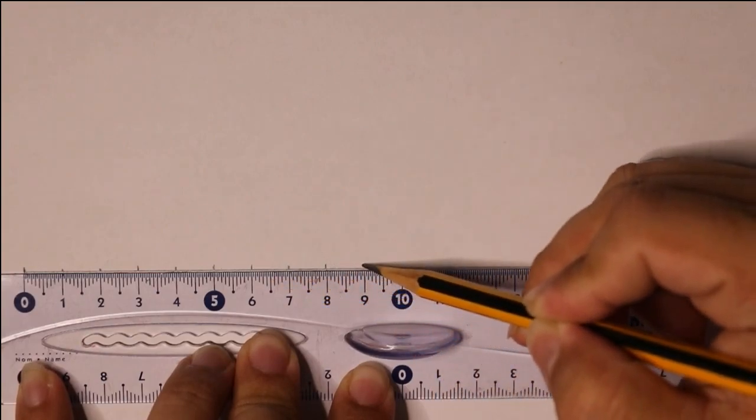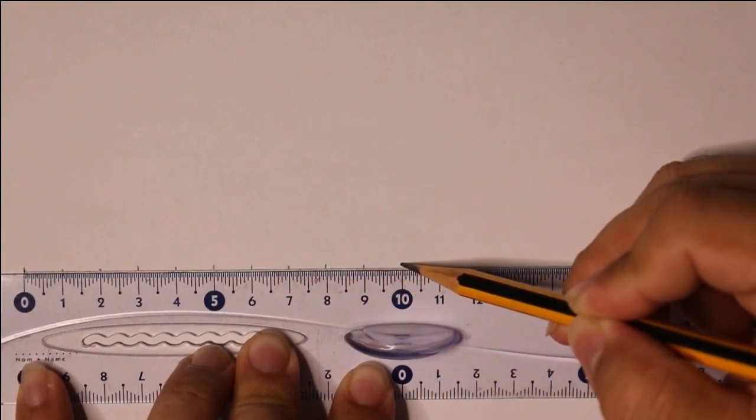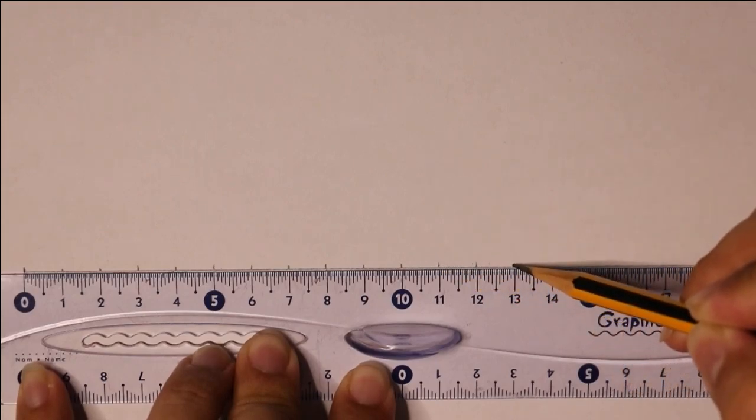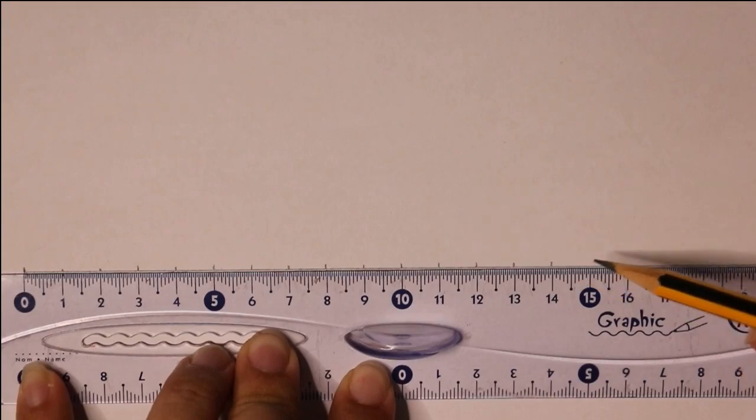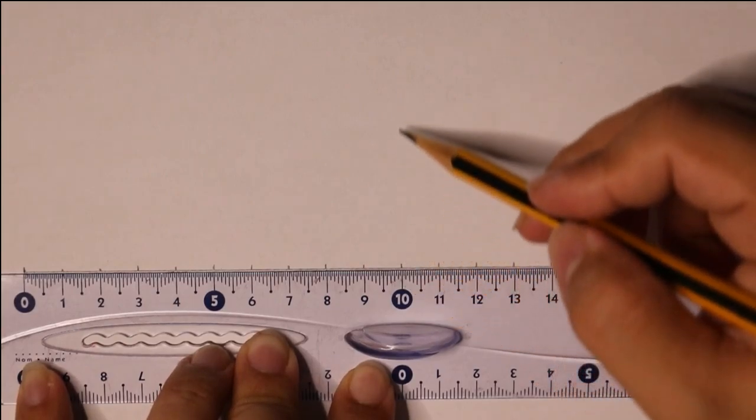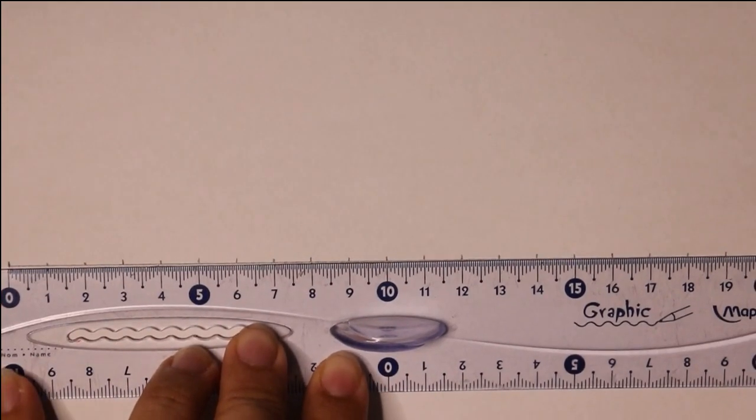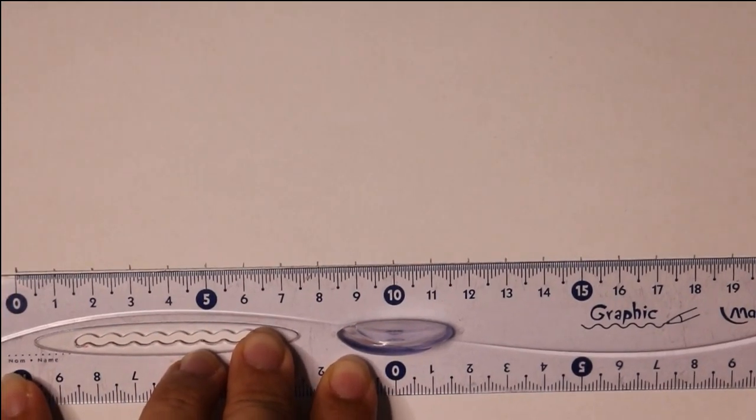You can graph on this piece of paper since the main measurement in the X axis is the range as well as the Y axis which is the maximum height. Now identify the center of your horizontal line. In this case it's at 10.